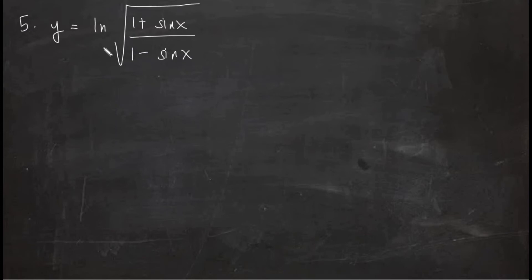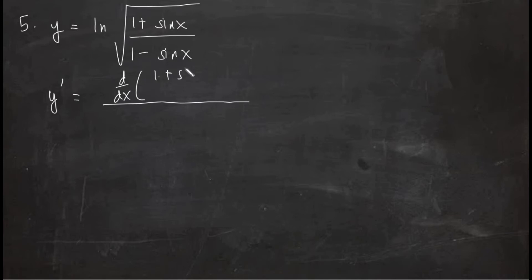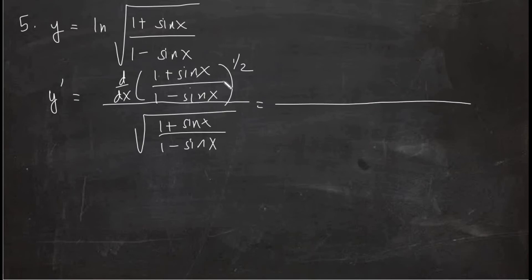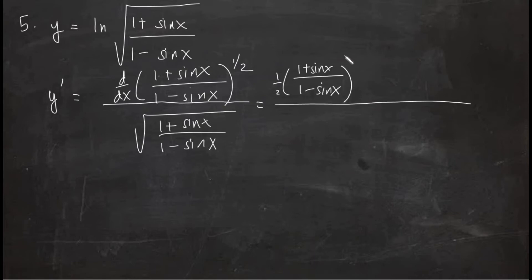Problem number five: y equals the natural logarithm of the square root of (1 + sin x)/(1 − sin x). For y prime, the derivative of u over u, where u = [(1 + sin x)/(1 − sin x)]^(1/2). We first apply the power rule, giving (1/2) times [(1 + sin x)/(1 − sin x)]^(−1/2) times the derivative of the inner quotient.